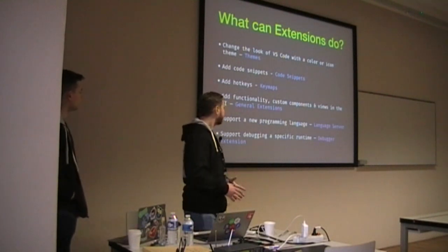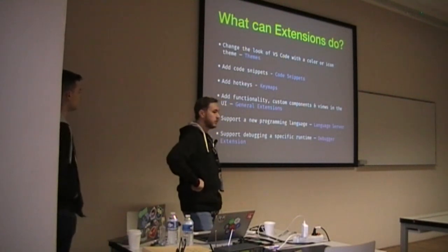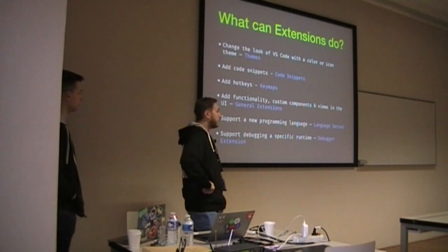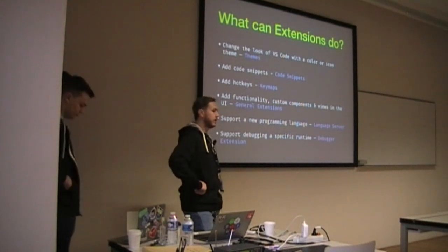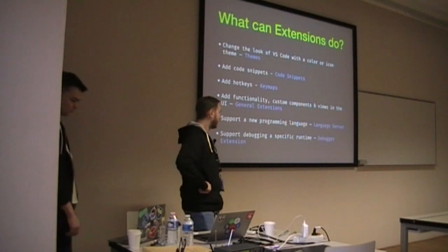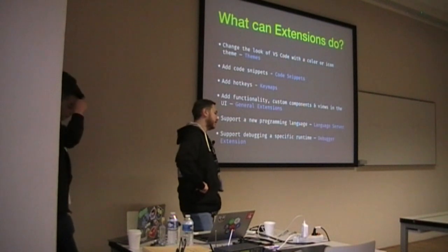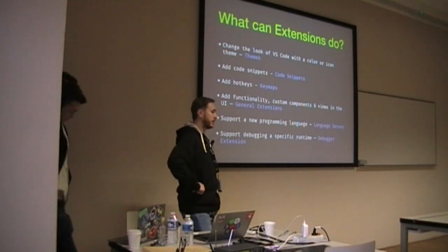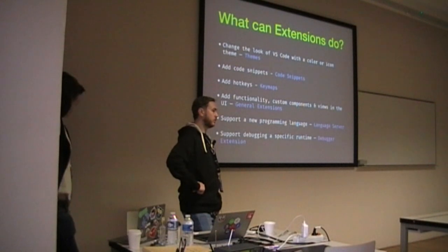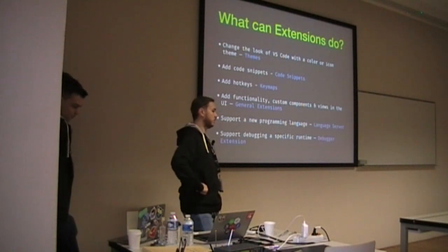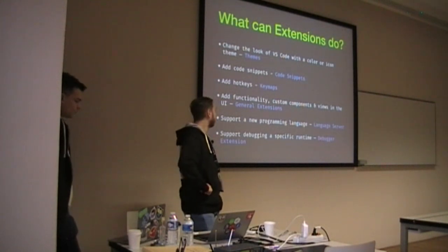What can extensions do? Visual Studio Code has different types of extensions you can create. First of all, you can change the appearance of your editor — you can create a theme. You can create extensions that add snippets to your text editor. You can create extensions that add new keymaps and key bindings, and so on.